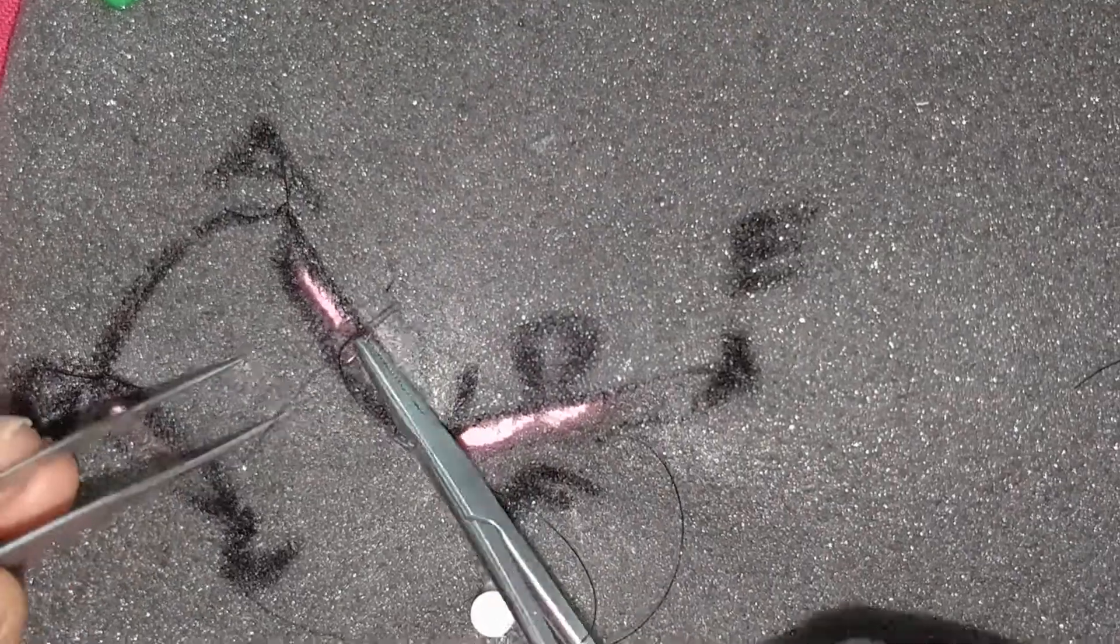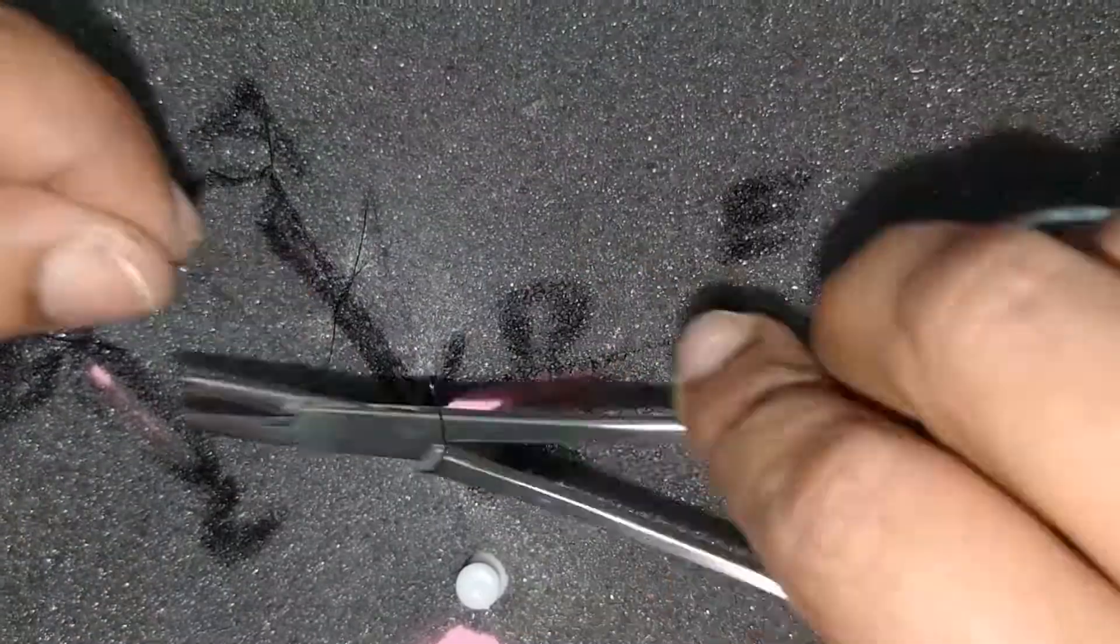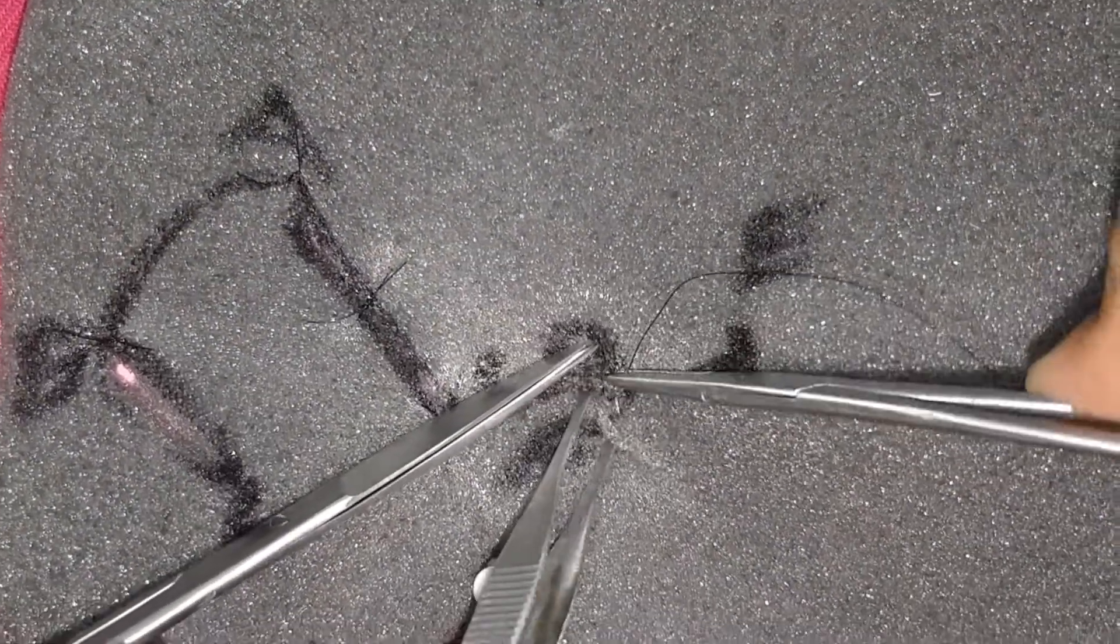After suturing the leading edge of the flap, the donor site must be closed. This can be done by making use of the laxity of the tissues. That is why selecting the side from which the flap is harvested is very important.